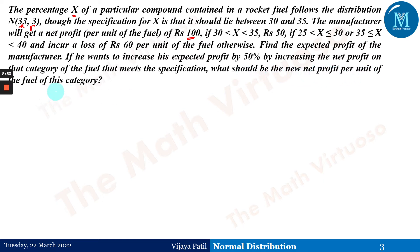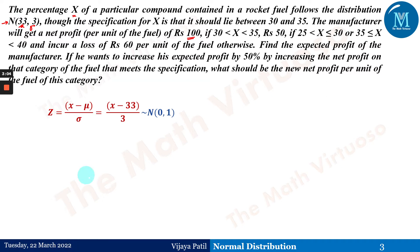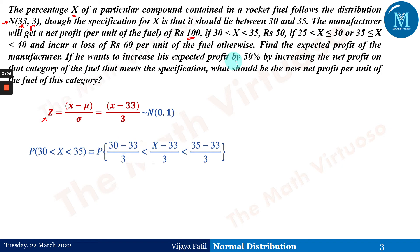In this question, X follows the normal distribution with parameters mu = 33 and sigma = 3. So the standardized Z is given by Z = (X - mu) / sigma = (X - 33) / 3, which follows N(0, 1). Now we need to find the probability that X lies between 30 and 35, since the manufacturer gets a profit of rupees 100 per unit for that specification.